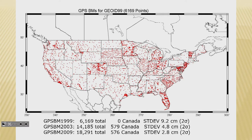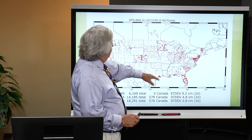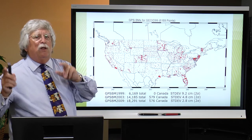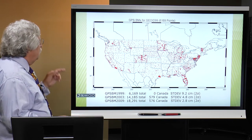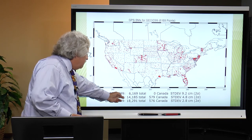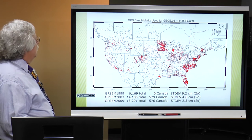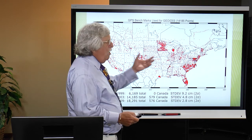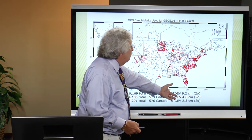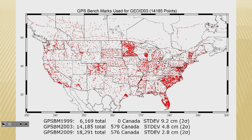Areas with some data include Minnesota, Maryland, New Jersey, Florida, and the Harris-Galveston area, with other areas having not so much. Moving from Geoid99 to Geoid03, we go from about 6,200 to 14,000 GPS on benchmarks, and the areas already doing GPS on benchmarks are still doing it — Minnesota, the Carolinas, Florida, Maryland, New Jersey, Vermont, and parts of Texas around Harris-Galveston. Moving to Geoid09, six years later with 18,000 GPS on benchmarks, the same communities continue doing the same things — so the geoid model is quite good in Minnesota, Wisconsin, Michigan, Florida, the Carolinas, and Maryland, but not so good in many other parts of the country.